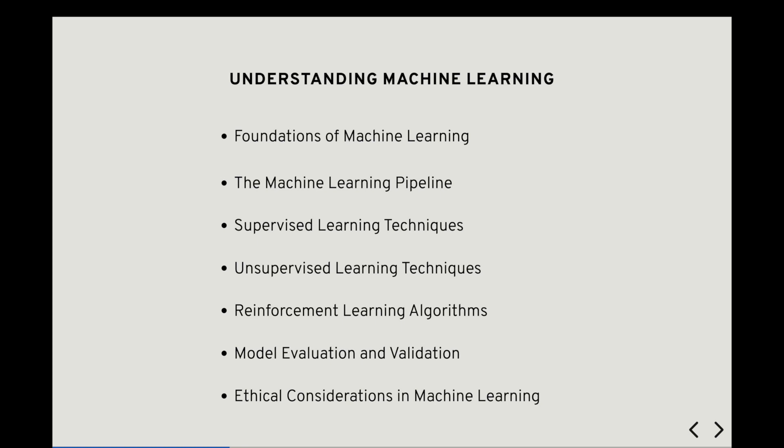Ethical Considerations in Machine Learning. As machine learning models increasingly influence decision-making processes in domains such as healthcare, finance, and criminal justice, it is crucial to address the ethical implications of algorithmic bias, fairness, transparency, and accountability. We examine real-world examples of bias and discrimination in machine learning systems and discuss strategies for mitigating these risks through ethical design practices, diverse representation in data, and algorithmic transparency.